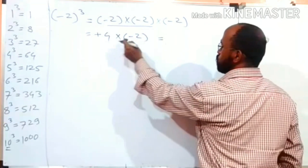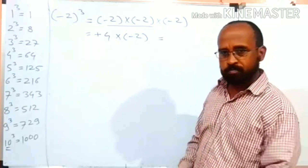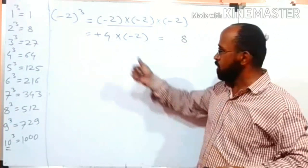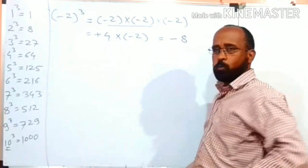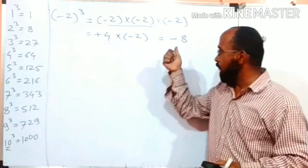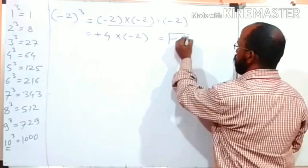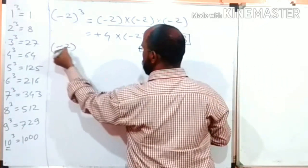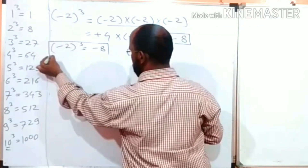So that is equal to 4 multiplied by minus 2. 4 twos are 8. Plus times minus is minus. While multiplying, if the symbol of both numbers is different, the symbol of the answer is always negative. So, minus 2 cubed is equal to minus 8. We found the first answer.